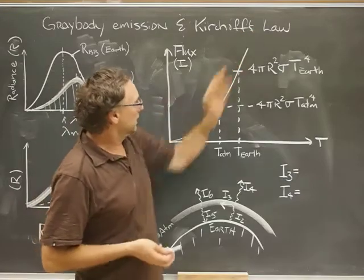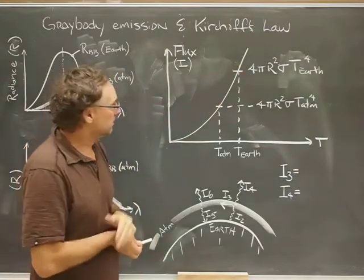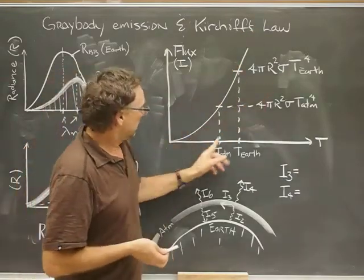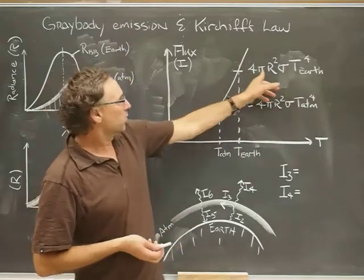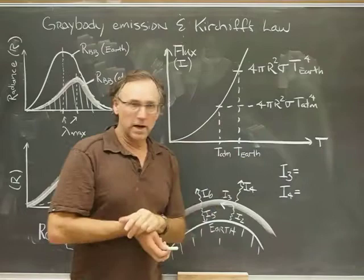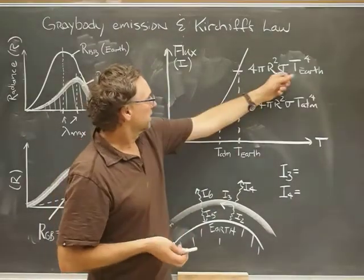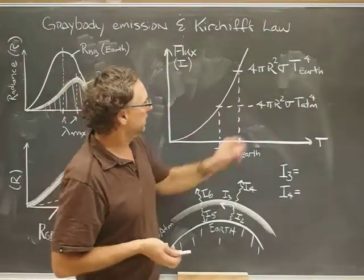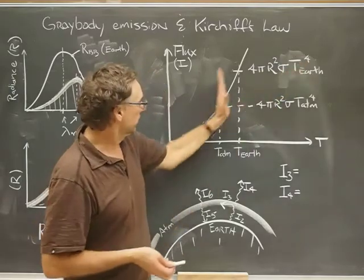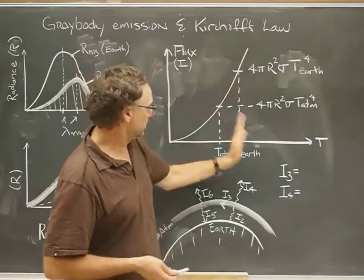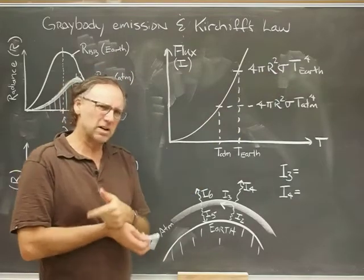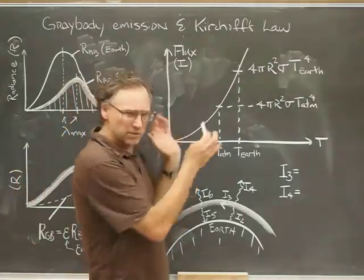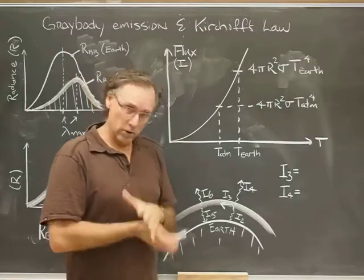I have the temperature of the atmosphere a little bit lower than the temperature of the surface of the Earth. This curve here is proportional to sigma times T to the fourth. As you can see, I've just put the total flux over here. The 4 pi r squared takes into account the surface of the Earth. There's the sigma, the Stefan-Boltzmann constant, and there's the temperature of the Earth raised to the fourth.